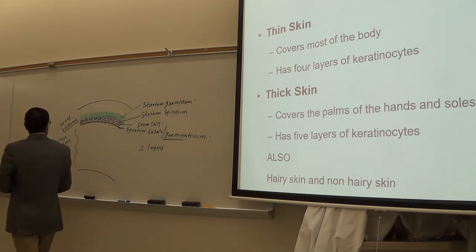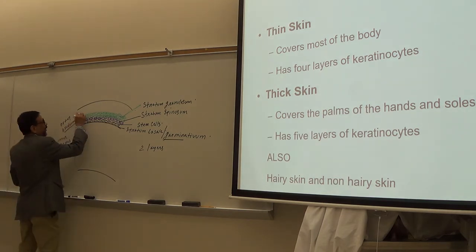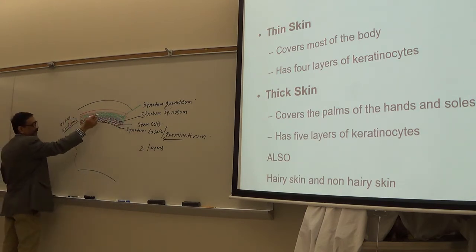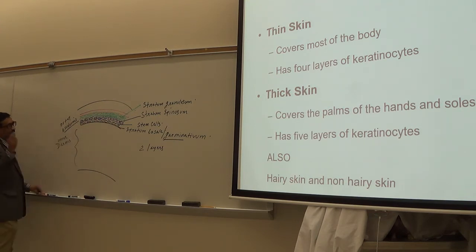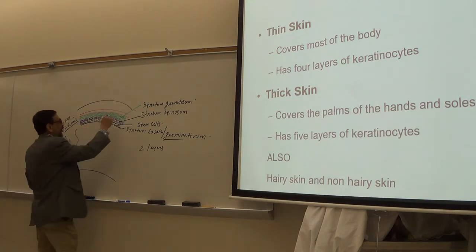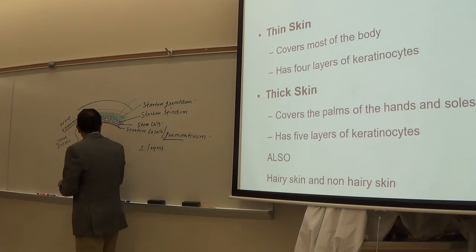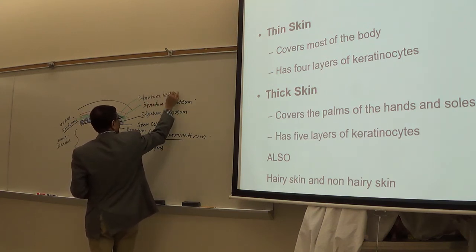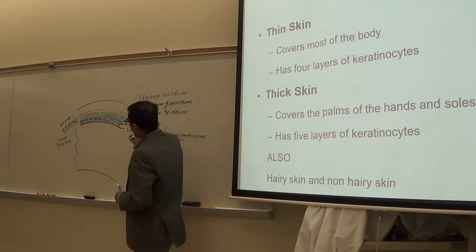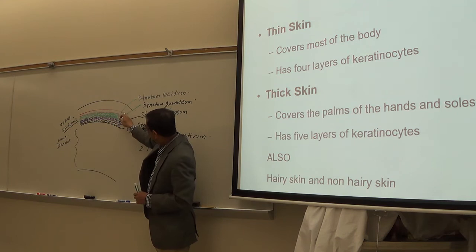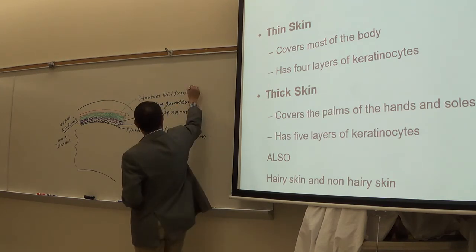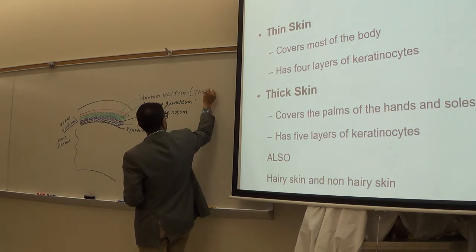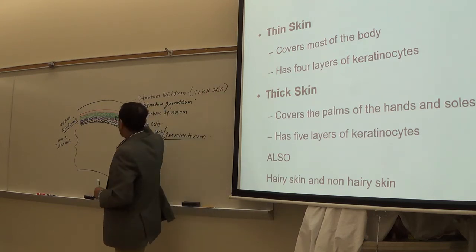Then you have a layer which is very transparent, like a glass-like layer. This is called stratum lucidum — lucidum means glass. This layer is present in thick skin but absent in thin skin. That's why we say four or five layers.